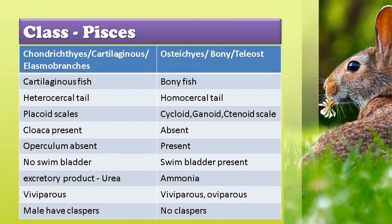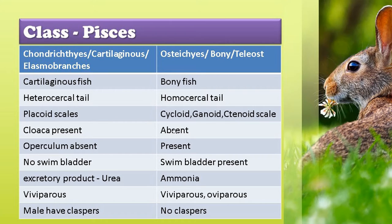Superclass Pisces is divided into Chondrichthyes and Osteichthyes. Chondrichthyes are cartilaginous fishes, also called elasmobranchs. Osteichthyes are bony fishes, also called teleosts. Cartilaginous fishes have a heterocercal tail, whereas bony fishes have a homocercal tail. Cartilaginous fishes have placoid scales on their body, while bony fishes have three types of scales: cycloid, ganoid, and ctenoid. Cloaca is present in cartilaginous fishes but absent in bony fishes. Operculum is absent in cartilaginous fishes, whereas bony fishes have an operculum covering the gill slits.